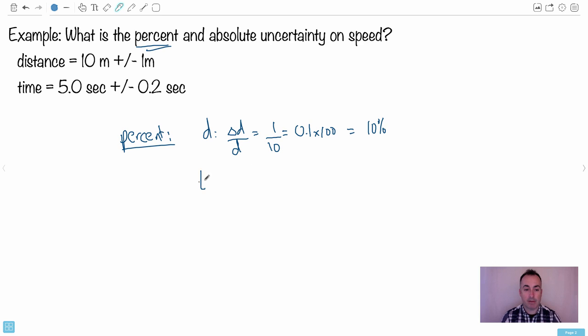We can do the same thing for time. For the time, we have delta T over T. I'm doing the fractional uncertainty on the time, and it's 0.2 divided by 5. And I do that, what do I get? I get 0.04. So 0.04 times 100, of course, to get the percent, and end up with 4%.